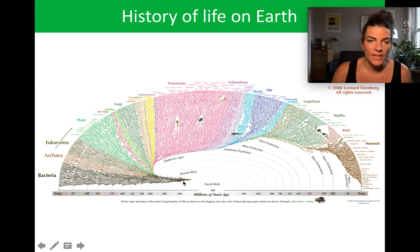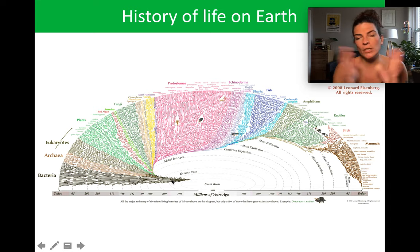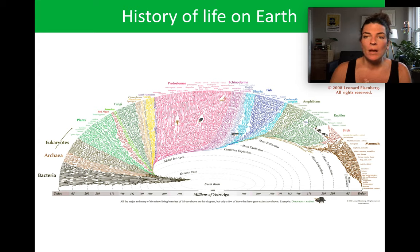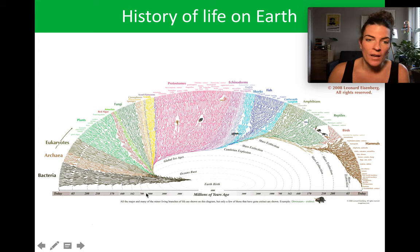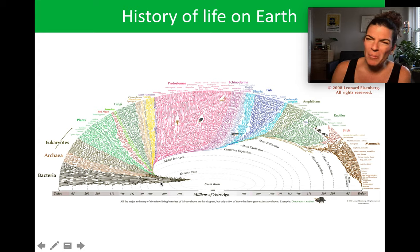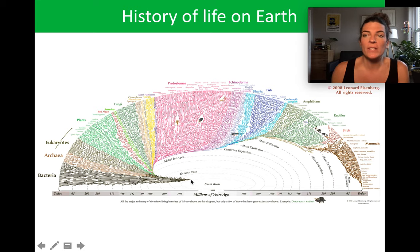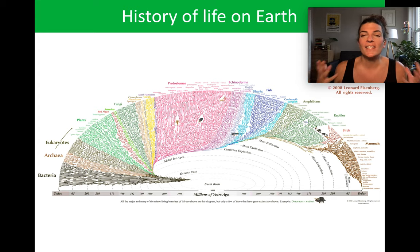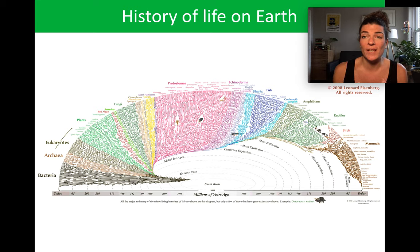Life on Earth begins, and then 3 billion years ago you have a couple of different species — not very many in the context of what we have now. This persists for billions and billions of years. From 3 billion years ago to 2 billion years ago, still not many more species than when we originally started 4 billion years ago. That's 2 billion years gone by — almost half of Earth's entire history — with very few single-celled organisms living in the oceans exclusively.